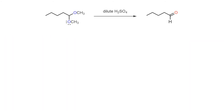The acetal serves as a useful functional group for aldehydes and ketones, and it is stable to the basic environments used in reductions and Grignard chemistry. However, they are quite sensitive to aqueous acid, in which they are converted back to the original aldehyde or ketone.